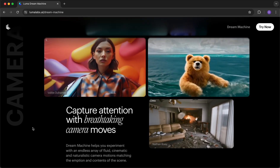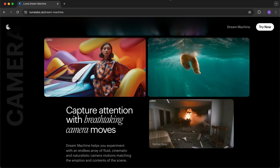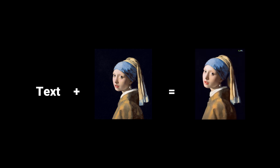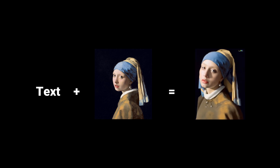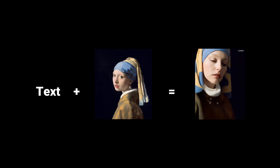Lastly, and probably one of the coolest things, is the image-to-video capabilities of Dream Machine. So you can not only pass a text, but also an additional image that the model can incorporate. And with that you can create videos that look like this.